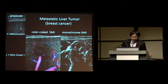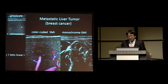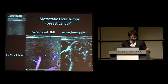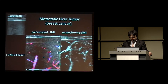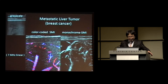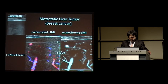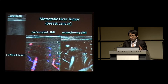This case is a metastatic liver tumor caused by breast cancer. On grayscale, you can notice a hypoechoic area that is suspicious, but you cannot be sure about the nature of this tumor. Using color-coded SMI, you can see many tumor vessels surrounding this hypoechoic area. And monochrome SMI shows more of the fine vessels, indicating this is a metastatic liver tumor.